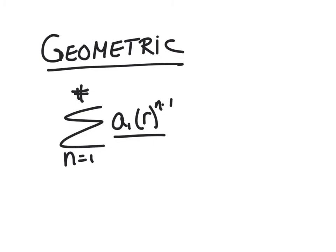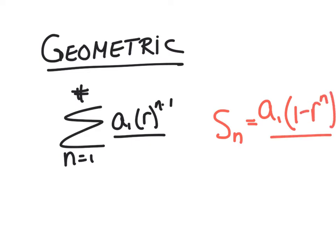There is a formula that goes with geometric: s sub n equals a sub 1 times 1 minus r to the n, all over 1 minus r. Just like in arithmetic, we give you this formula, but you can use summation notation every time. Our exam actually gives us this formula on the reference sheet, so I'm going to practice using both tonight.